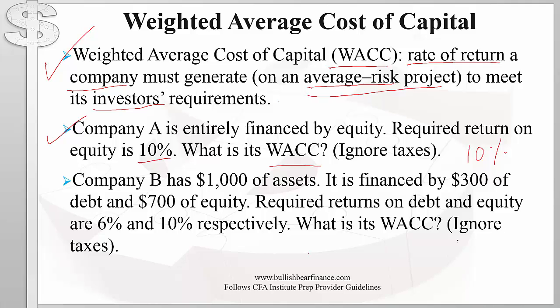Now let's look at a slightly more complicated example. Company B has one thousand dollars of assets, financed by three hundred dollars of debt and seven hundred dollars of equity. The required returns on debt and equity are six percent and ten percent respectively. What is the company's WACC, ignoring taxes? Unlike the previous example, we have both bondholders and shareholders for Company B. To find how much return the company must generate to meet their requirements, we take the weighted average of the return for all investors and compute the weighted average cost of capital.